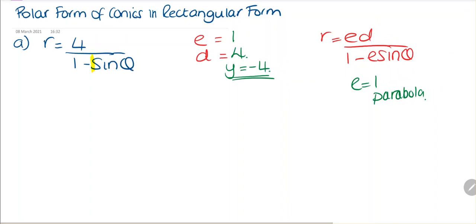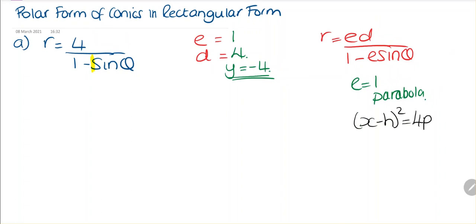So what do we know about a parabola? The rectangular form is (x minus h) squared is equal to 4p times (y minus k). We need to get the values of h, k, and p so we can substitute into our formula.